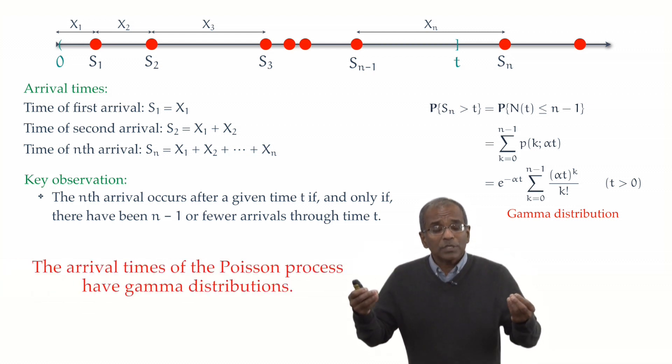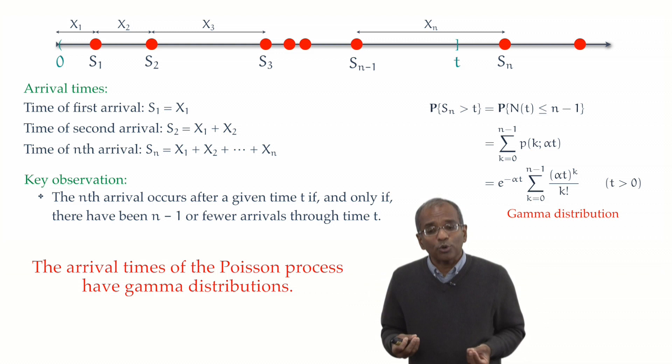And therefore, we have a simple slogan. The arrival times, the waiting times of the Poisson process, are governed by gamma distributions.